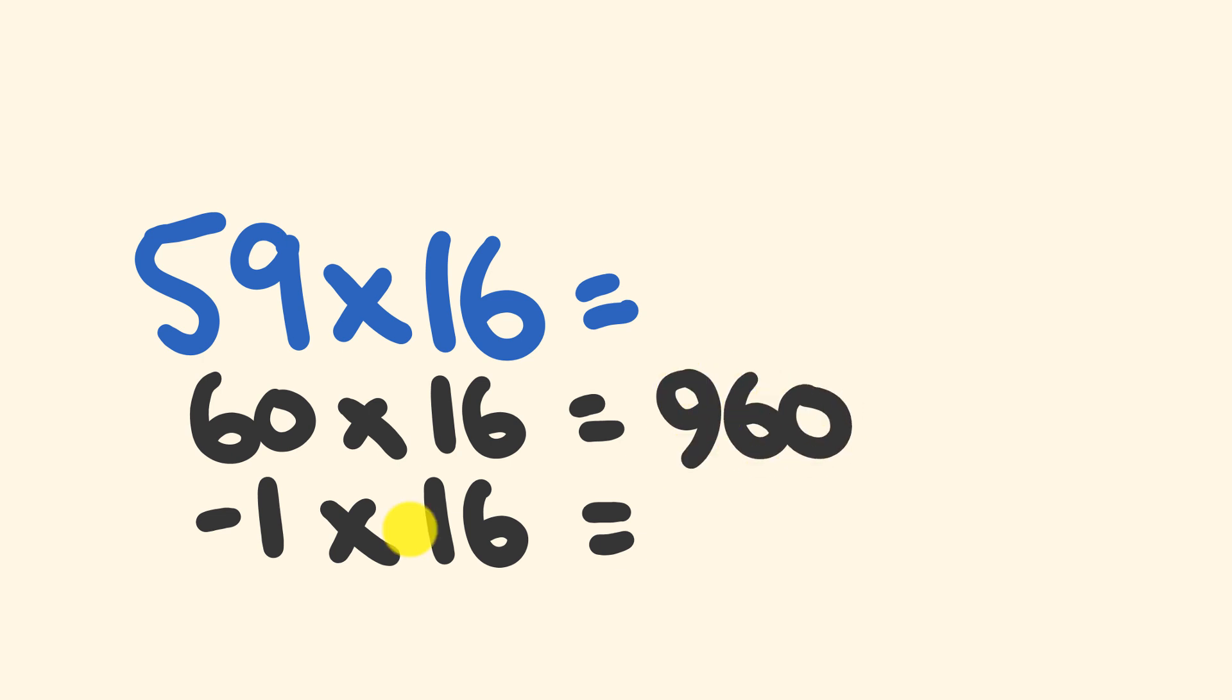And from this, we're going to be subtracting 1 times 16, which is minus 16. So we have 960 minus 16, we get our final answer of 944.